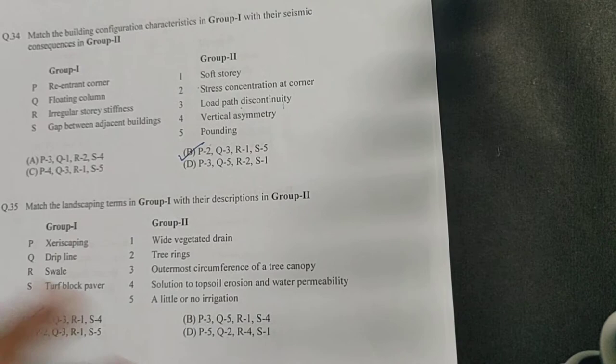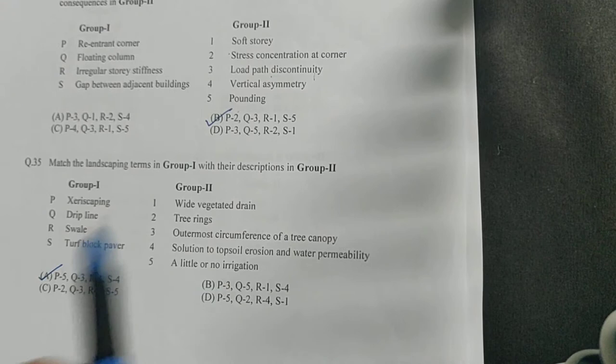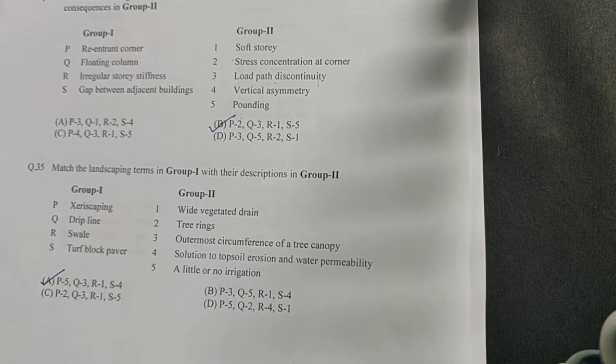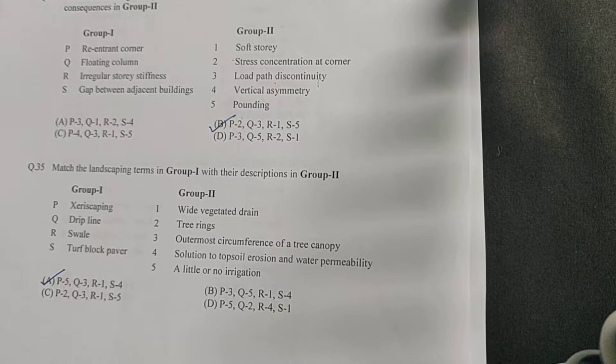The next question is from landscape. You have some terms given and their descriptions. First is xeriscaping. Xeriscaping is done in desert areas where you have very limited water. You water the plants in such a way that very little water is given or no water is given.